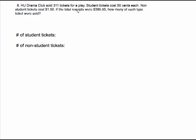Very similar problem here. This time, instead of talking about frames, we're talking about tickets. In this problem, we sold 311 tickets. Student tickets cost 50 cents each, non-student tickets cost $1.50, and here's our total receipts. So we're asked for how many of each type of ticket were sold. These are going to be my variables. The number of student tickets, I'll call that S. The number of non-student tickets, I'll call that N.